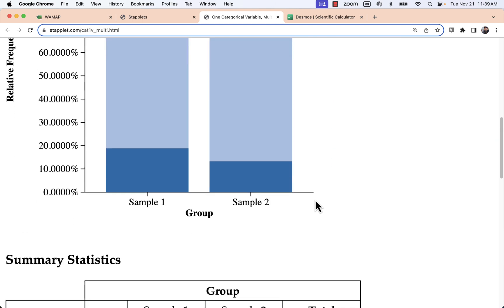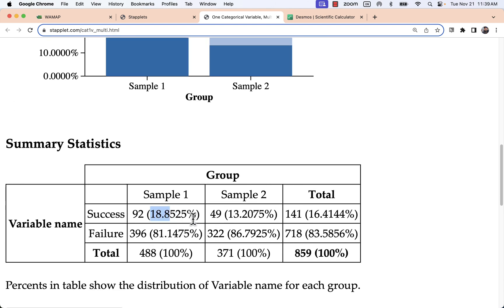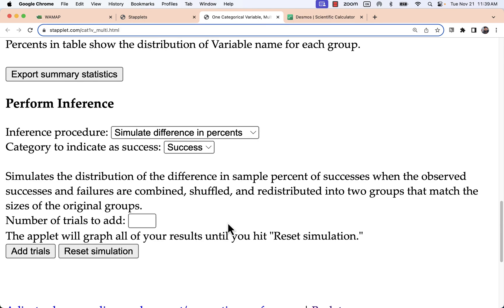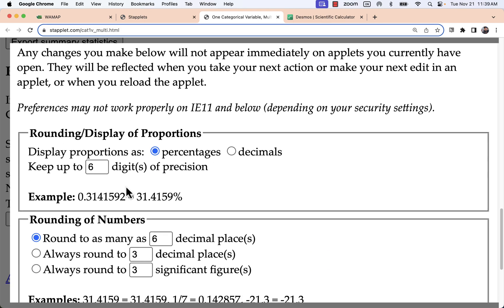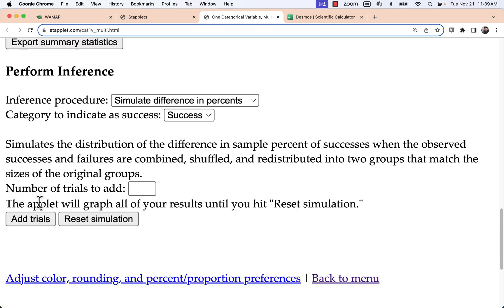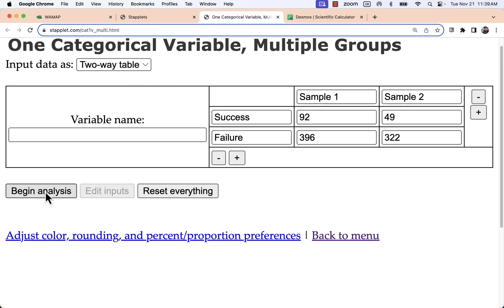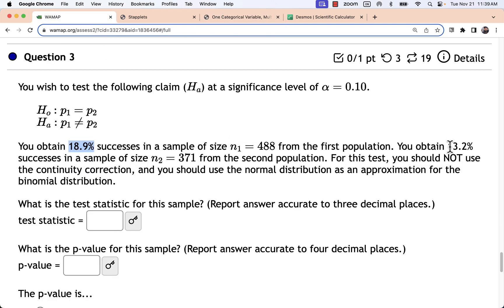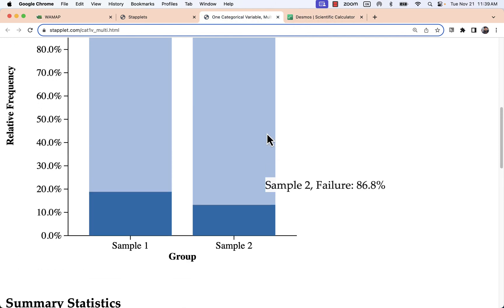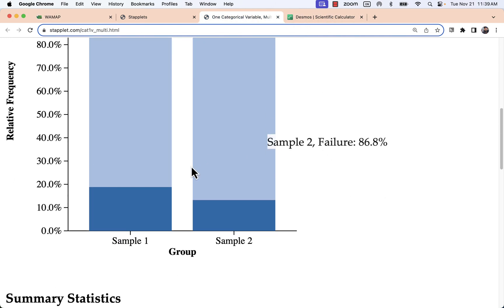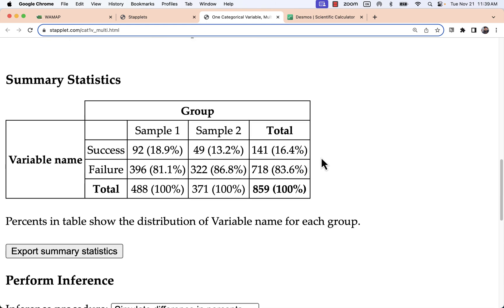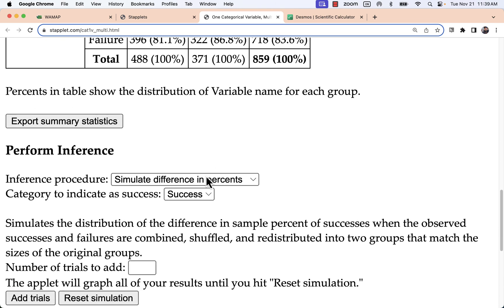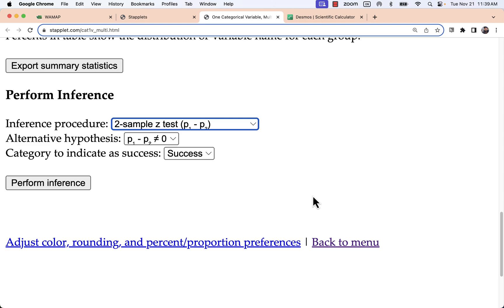Now I should see the same percentages that I started with if I round them to three decimal places. I can do that rounding down here. 18.9% and 13.2% like I see back here in the problem. So those are the two percentages that I'm comparing. Visually speaking they maybe look a little bit farther apart than the last problem. And I will look at my z test.